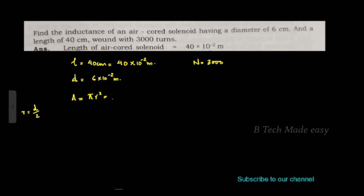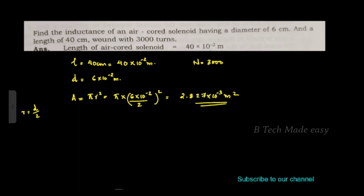Radius r is equal to D divided by 2. Cross-sectional area A is equal to pi r squared: pi into 6 into 10 raise to minus 2 divided by 2, squared. This gives 2.827 into 10 raise to minus 3 meters square.